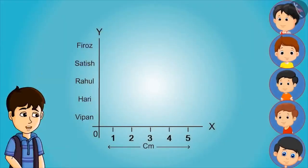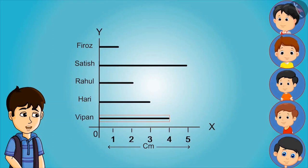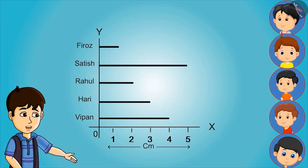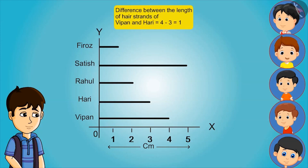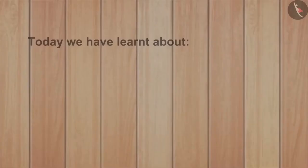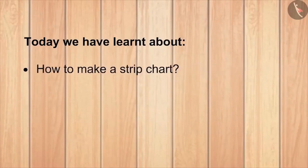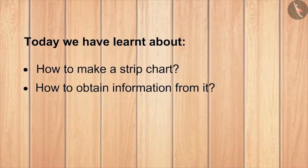Brother, what are you making for so long? I have made a big chart for you. Now all of you have to measure a strand of your hair and tell me the length. Vipan, what is the length of your hair strand? 4 cm. And yours, Hari? 3 cm. So who has the lengthiest hair? Mine. How long is your hair from Hari's? 1 cm. Vipan, go get a nice haircut! Today we have learnt about how to make a strip chart and how to obtain information from it.